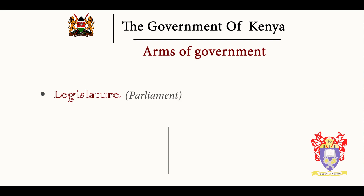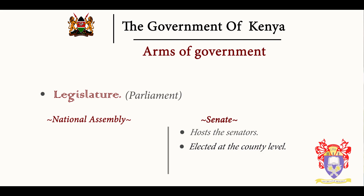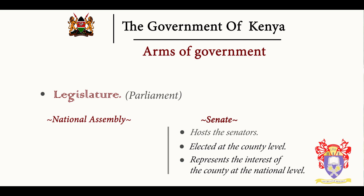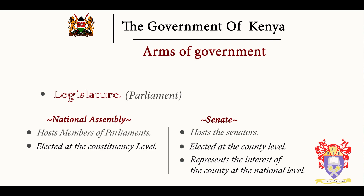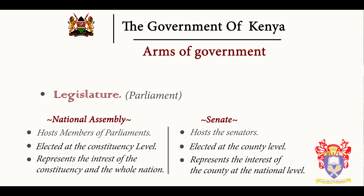Legislature is also called Parliament. Parliament is divided into two: we have the National Assembly and the Senate. In the Senate we have senators, who are elected at the county level to represent the interest of the county at the national level. Members of Parliament are elected at the constituency level to represent the interest of the constituency and the whole nation.